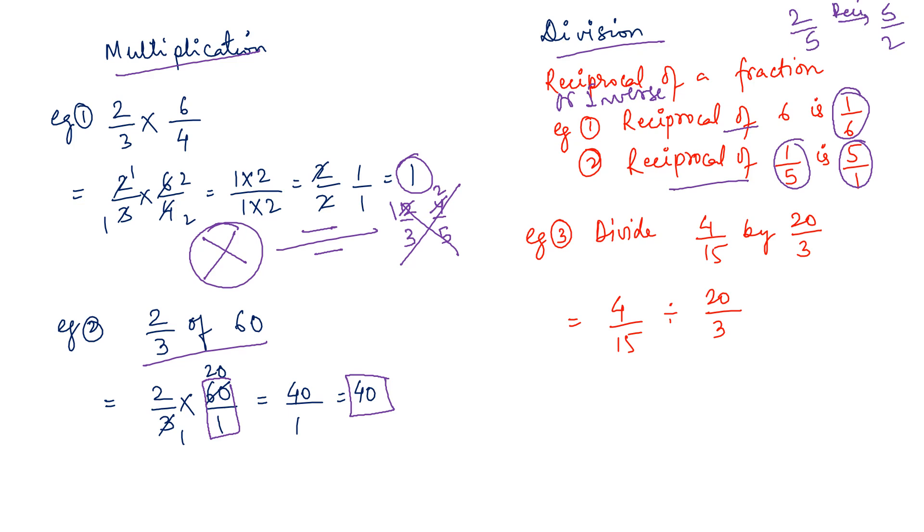So what we do? We do the reciprocal of the second fraction here. 4 by 15 divided by 20 by 3. So I will write 4 by 15 as it is. We will change this division sign to a multiplication sign and it will be 3 by 20. Now 4 ones are 4. 4 fives are 20. 3 ones are 3. 3 fives are 15. That is 1 into 1 by 5 into 5. That is 1 by 25 is your answer.